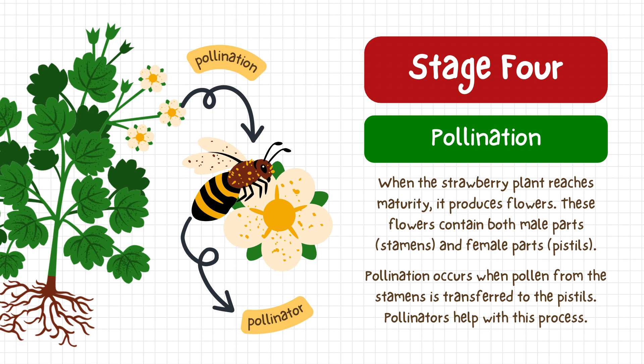Stage four is pollination. When the strawberry plant reaches maturity, it produces flowers. These flowers contain both the male part, stamens, and the female part, pistils. Pollination occurs when pollen from the stamens is transferred to the pistils. Pollinators like bees help with this process.